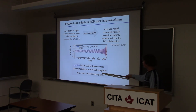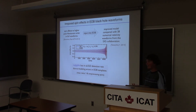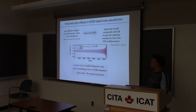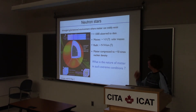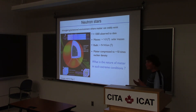For black holes, this concludes all the parameter space that has to be mapped, except of course extending to higher mass ratios. Black holes are very simple — they just have mass and spin, they don't have anything else. Let me now move on to neutron stars, where for the purpose of the gravitational waves, finite size effects become important. As you probably know, neutron stars are the strongest gravitational environment where matter can stably exist — if you compress the matter even a bit more, it would collapse to a black hole.